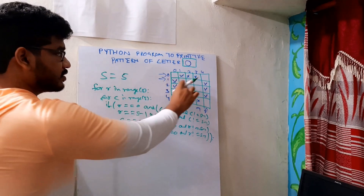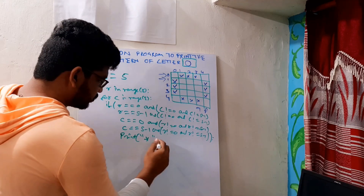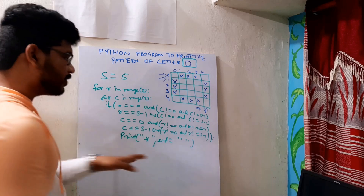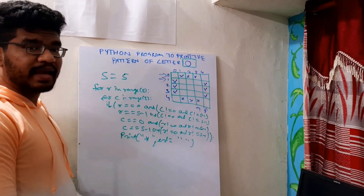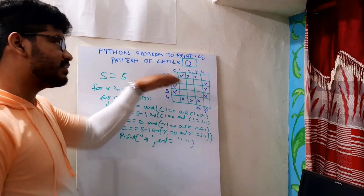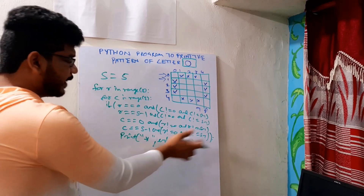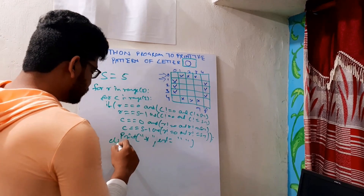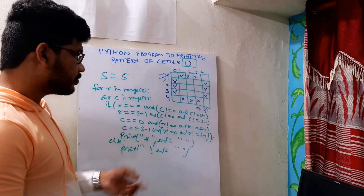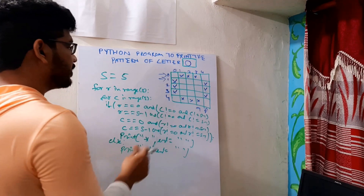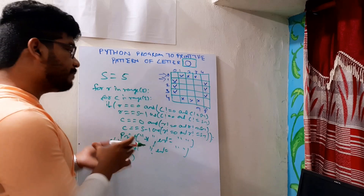All these conditions will print stars in the three stars on each side — these three, these three, these three, and these three. So write print star. I have written end as an empty string. By default, print takes end as newline, meaning after printing a star it goes to the next line, but we don't want that. It should continue in a straight line for a complete iteration. So I set end as empty. In the else case, simply print spaces. After each complete row iteration, do an empty print to go to the next line.